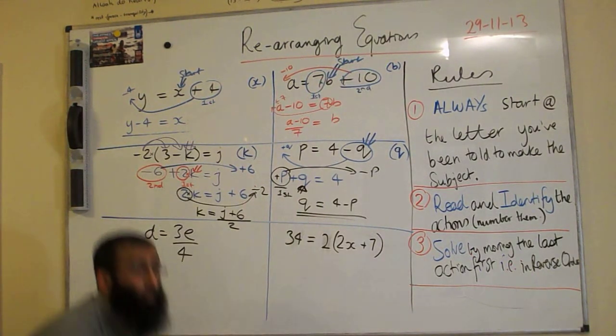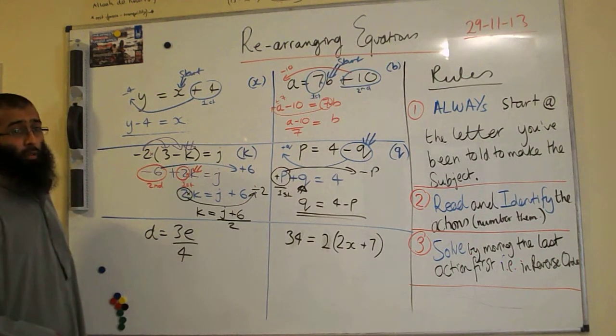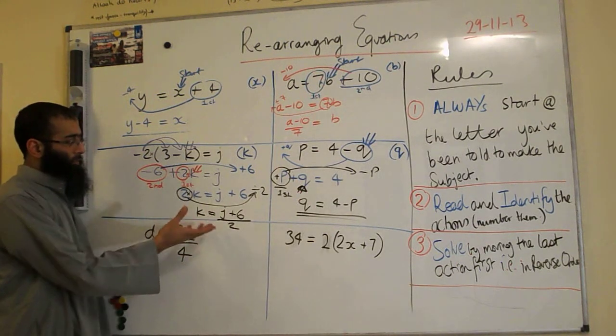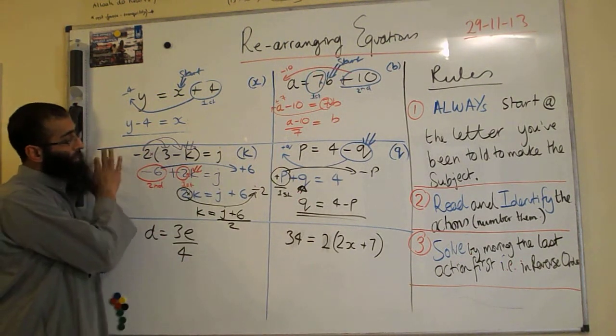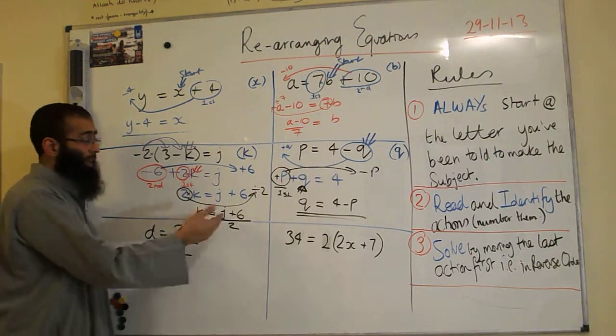If you solve it, would you divide the 6 by the 2? To solve it, yeah, you would do that. At the moment, we have now rearranged it. To solve it, you have to put a value in for J. You have to substitute value in for J and work it out.